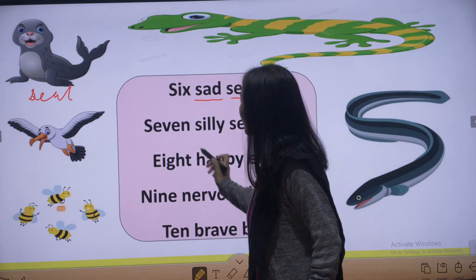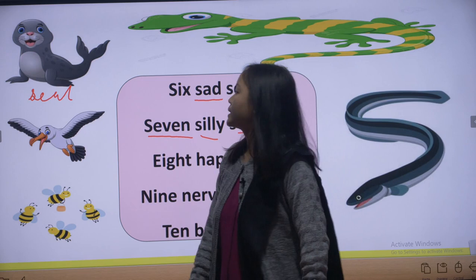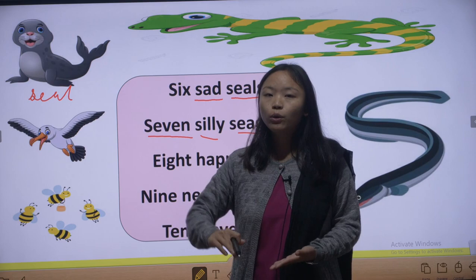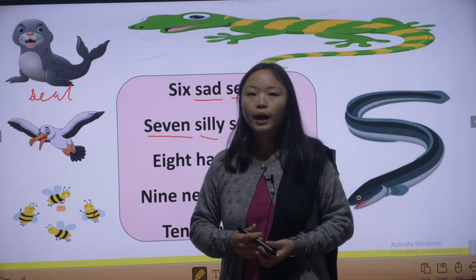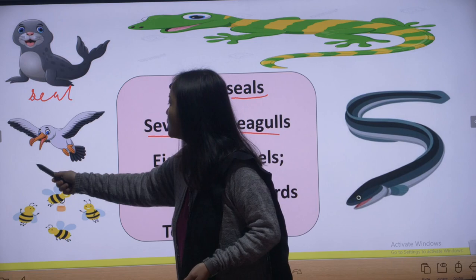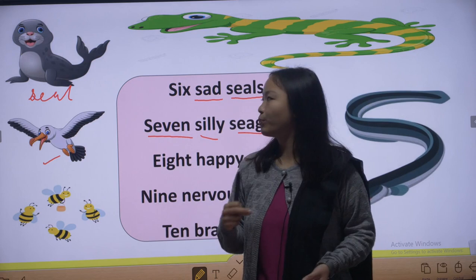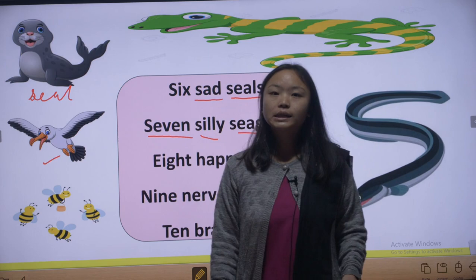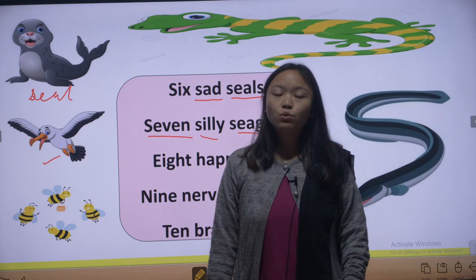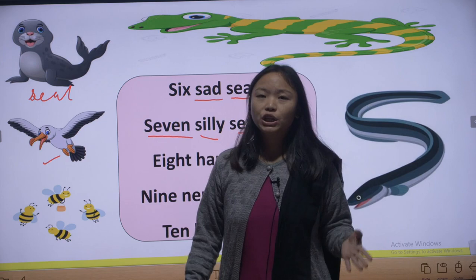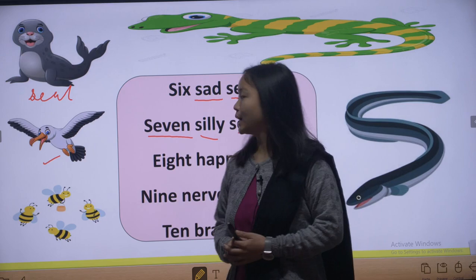Seven silly seagulls — there are seven seagulls and they are silly. 'Seagulls' means a water bird. They fly above the water, as you have seen in cartoons. A seagull has a yellow long beak, white and black color. Seagulls also eat fish. 'Silly' means foolish.